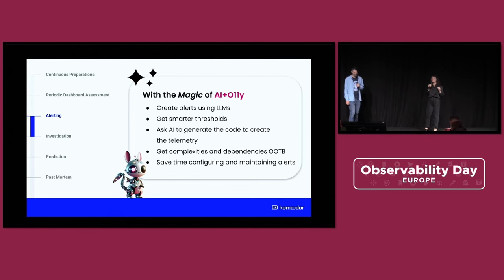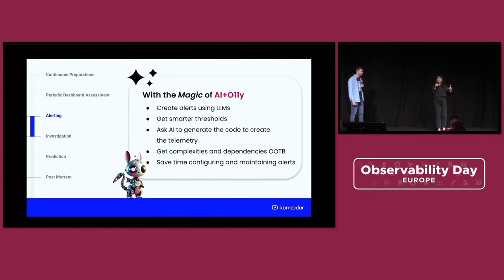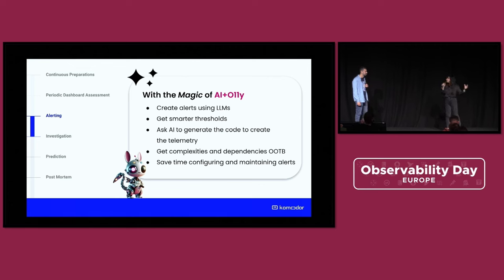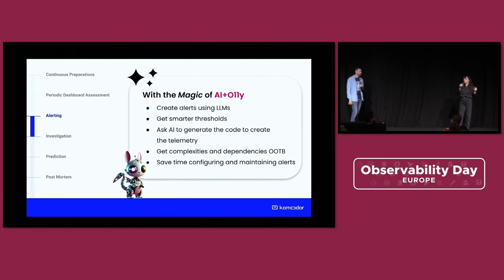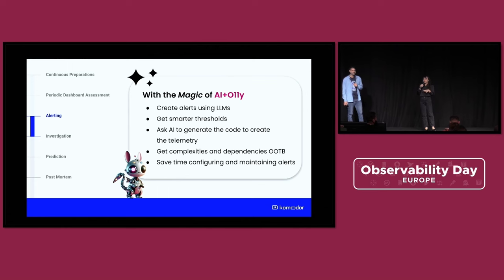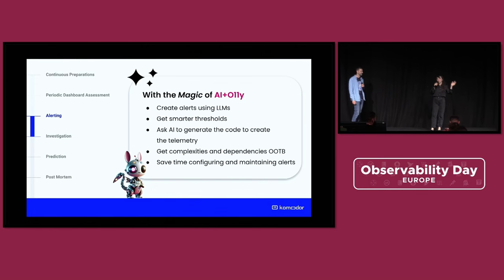With the magic of AI, we can create alerts using LLMs for a start, and we can get smarter thresholds. Nowadays thresholds are static, but with AI it can look across the entire system and make correlations that are harder for us as human beings. It can create dynamic thresholds that change based on the state of the entire system, or the day — for example if there's a holiday. And we can also get complexities and dependencies out of the box, saving time from configuring alerts one by one.